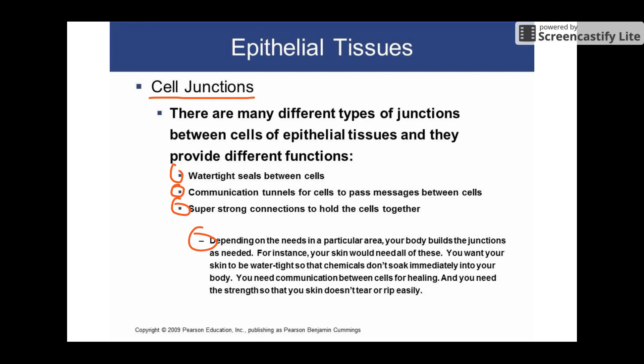There are also junctions that allow communication — cells passing signals back and forth — that's how cells know whether there's damage around them or what kind of chemicals they need. And then there are other ones that are like super strong connections between the cells. It depends on what you need in a certain area, which of these junctions you'd have. Your skin actually has all of these — a watertight seal, communication between cells to allow for healing, and super strong connections that give your skin its strength so it doesn't rip off when somebody pulls on your arm.